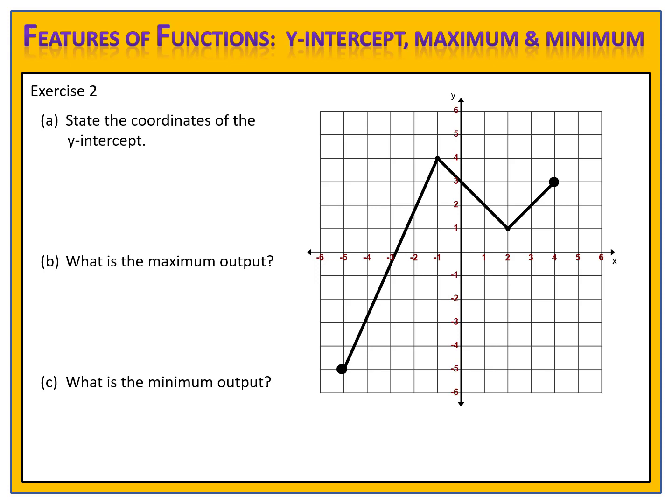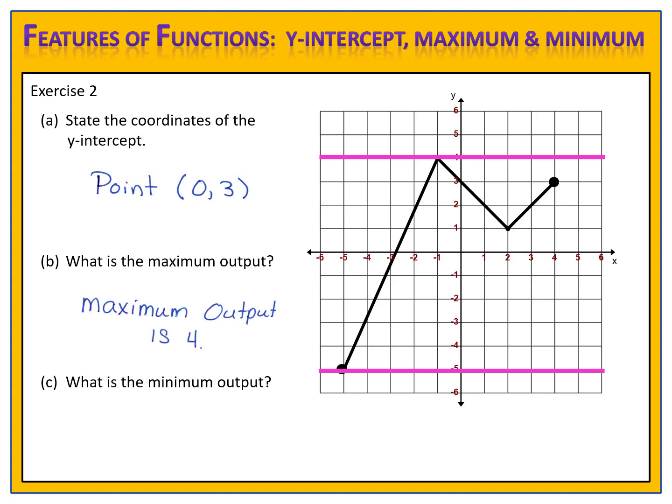Let's compare answers. Part A — state the coordinates of the y-intercept. We're looking to see where the graph passes through the y-axis, and it does at this point right here. Part B — state the maximum output of the function. The highest y value is positive 4, so the maximum output is 4. Part C — the minimum refers to the lowest y value. That y value is negative 5, so the minimum output is negative 5.